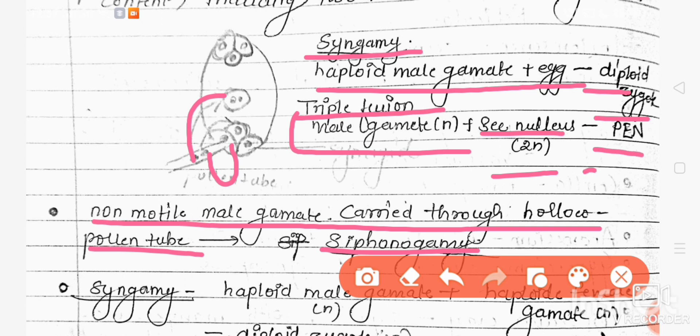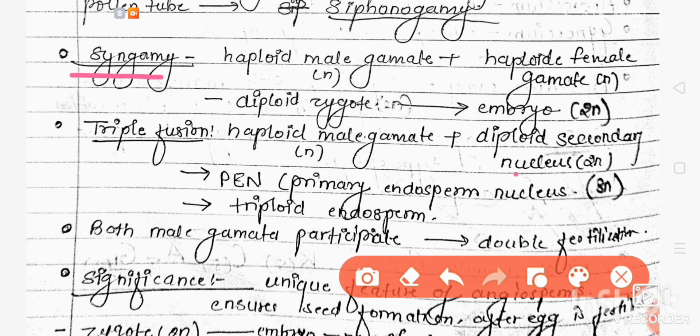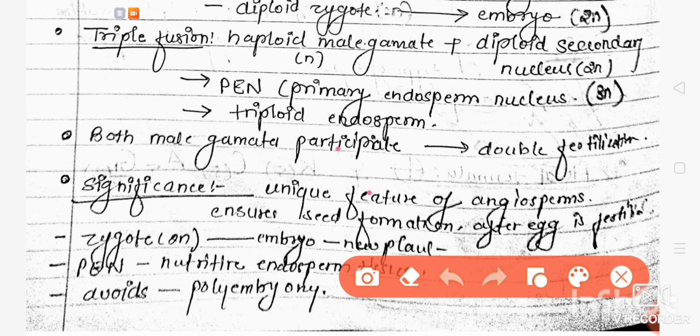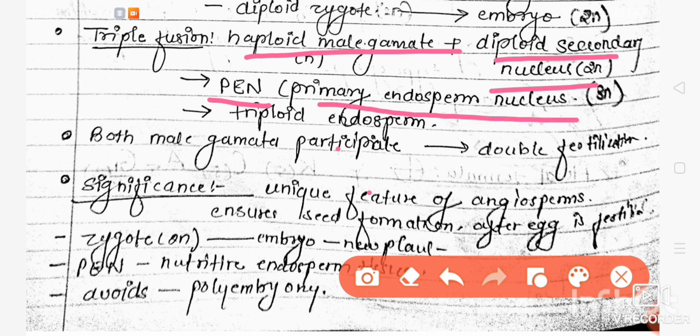It is termed as triple fusion. In syngamy, the haploid male gamete and haploid female gamete fuse to form a diploid zygote. Further division will form the embryo. In triple fusion, the haploid male gamete fuses with the diploid secondary nucleus to form PEN, the primary endosperm nucleus, which is triploid endosperm.